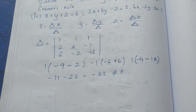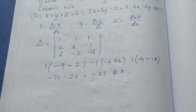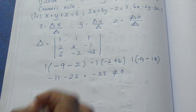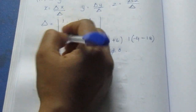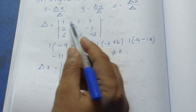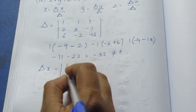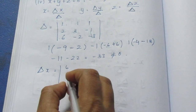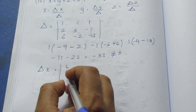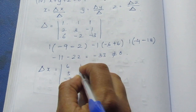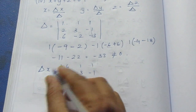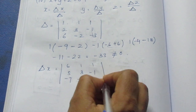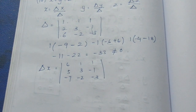There is no problem in the numerator, but if the denominator is 0, the total value is not defined — that is why we check the determinant first. Now let's compute determinant x (delta x). We substitute the constants 6, 5, minus 7 into the x-column of the matrix.